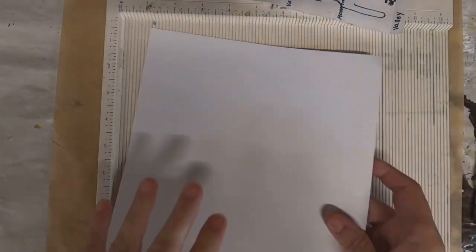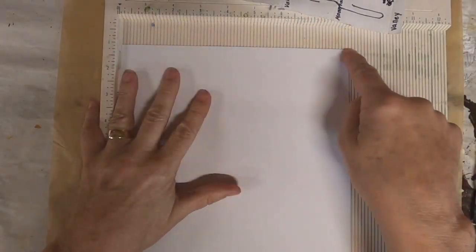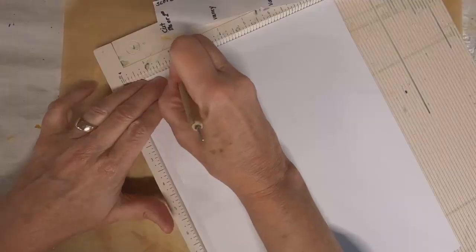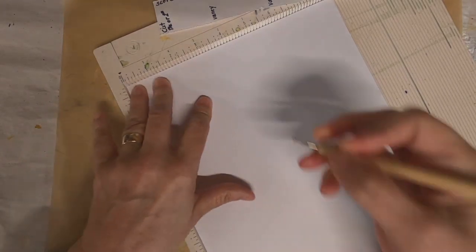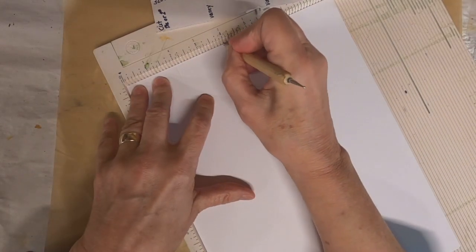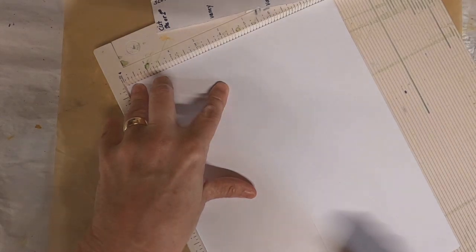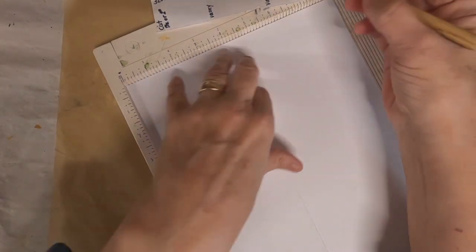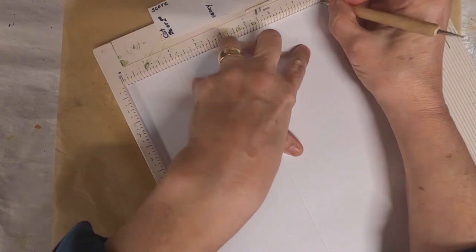So let's just get out the scoreboard, get out a piece of that eight and a half by eleven inch paper, and we're going to score it at two inches, score it again at four, score it one more time at eight and one eighth inch.